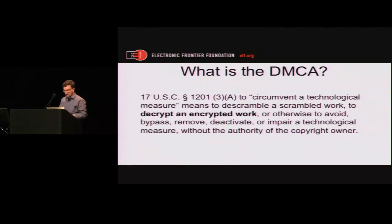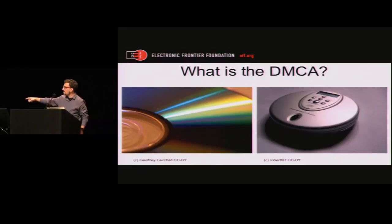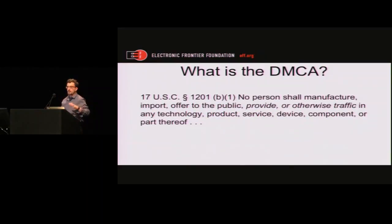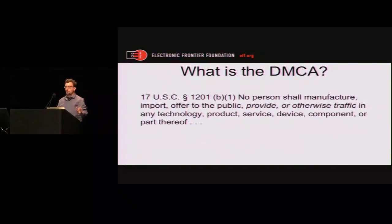This was originally written with 1998 technology in mind — specifically technology around traditional creative work. The canonical example at the time was the encryption on DVDs, and various kinds of digital audio encryption, none of which are really relevant anymore. But the law is written really broadly. You'll also hear the term DRM — digital rights management, or digital restrictions management — as another term for these sorts of controls, often cryptographic but not always.